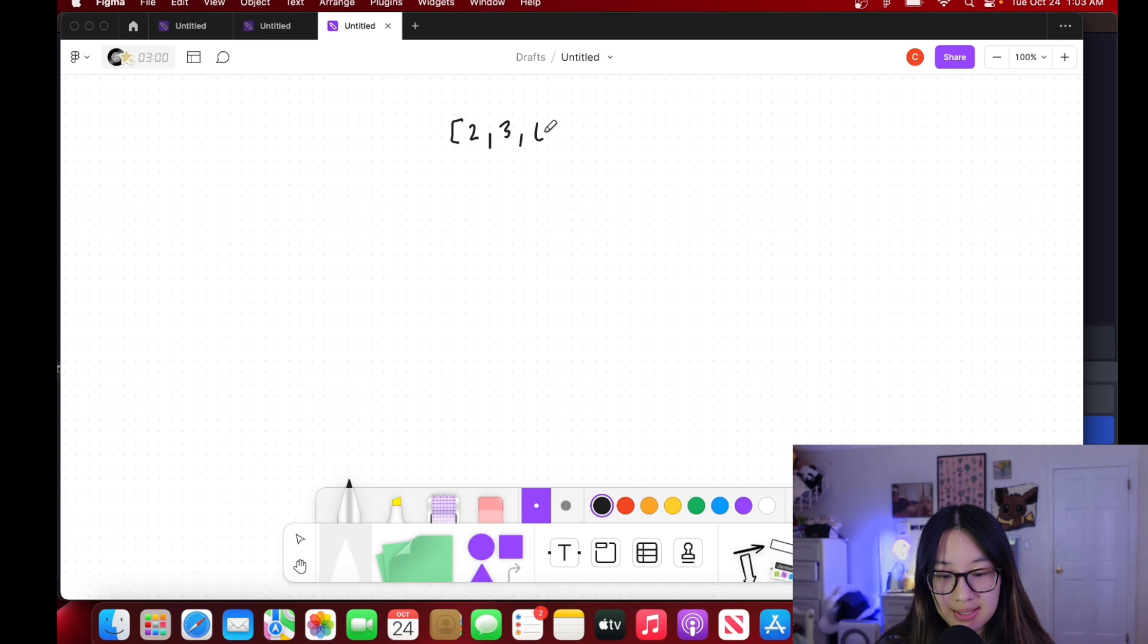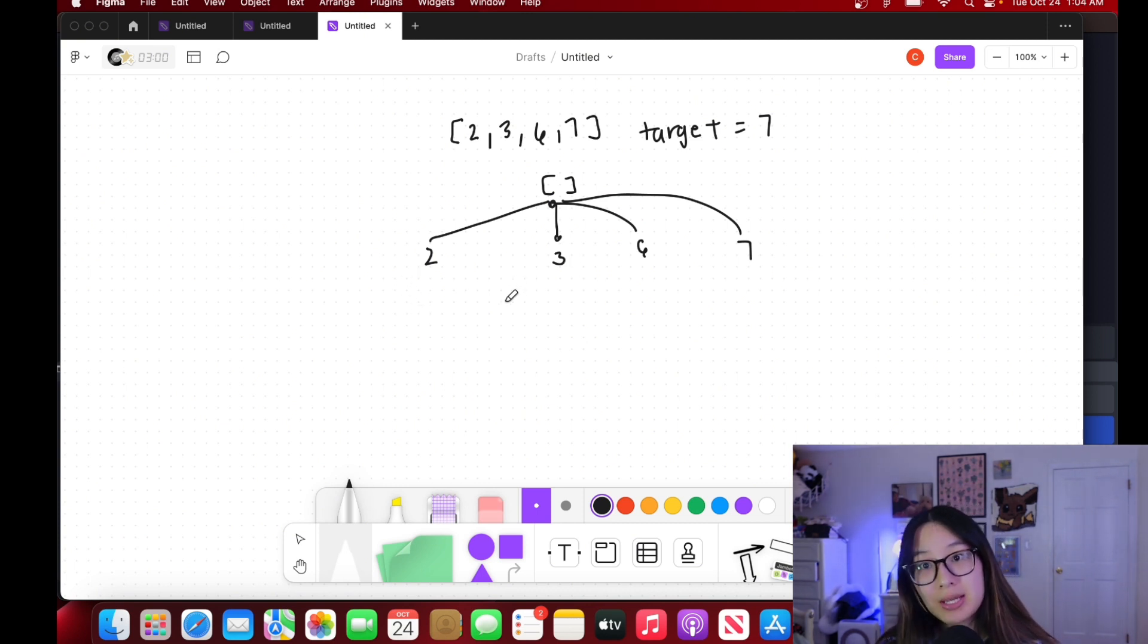Our input is 2, 3, 6, 7 and our target is 7. We're going to make a decision tree. We have an empty list and we want to try to go down each and every path. If it's below 7 we keep going. If it equals 7 we add it to our list. If it's greater than 7 we get rid of that branch.